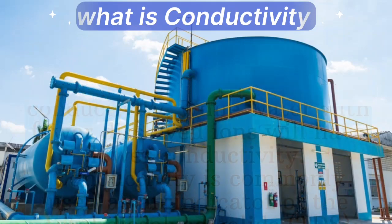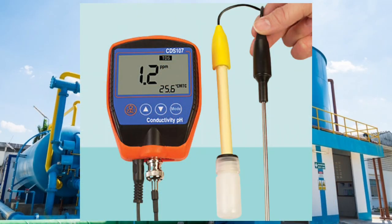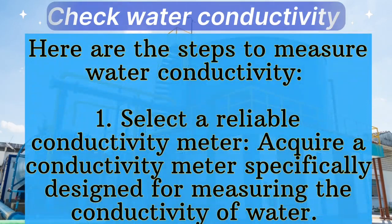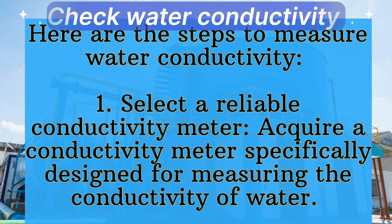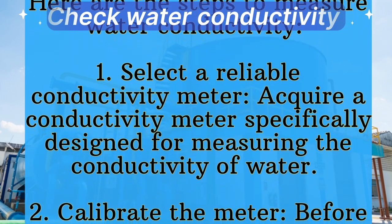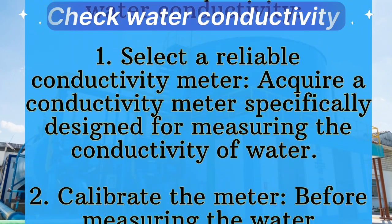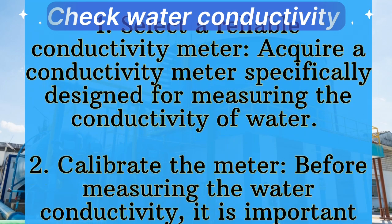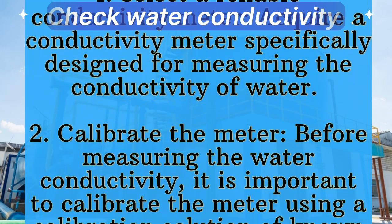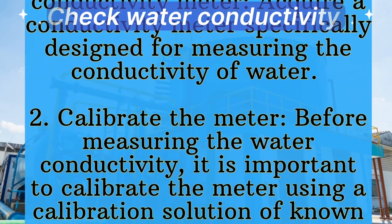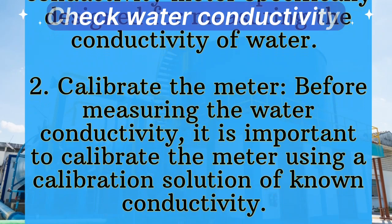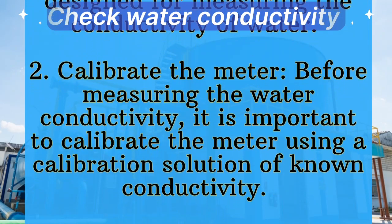Here are the steps for measuring water conductivity. Step 1: Select a reliable conductivity meter. Acquire a conductivity meter specially designed for measuring the conductivity of water. Step 2: Calibrate the meter. Before measuring the water conductivity, it is important to calibrate the meter using calibration solutions of known conductivity.